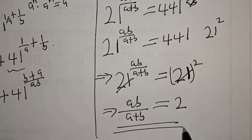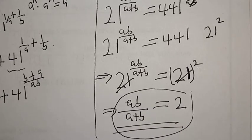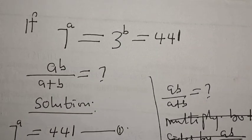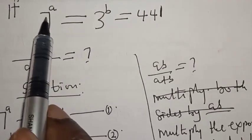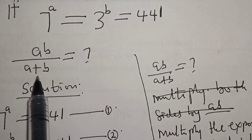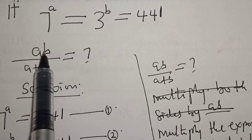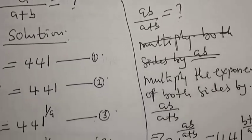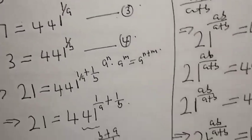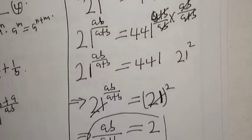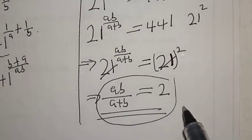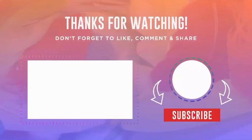Our answer is 2. So remember, the question says we should solve for ab over a plus b from the given equation: 7 raised to power a equals 3 raised to power b equals 441. And from our working we get the final answer ab over a plus b equals 2. Please don't forget to like, share, comment, and subscribe. Thank you.